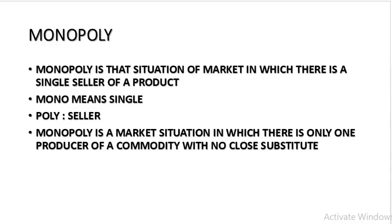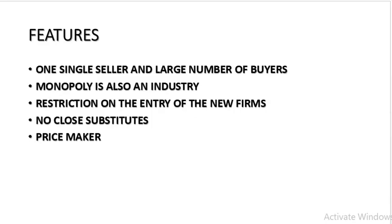Now we will understand what is monopoly. Monopoly is that situation of the market in which there is a single seller of a product — mono means single, poly means seller. Monopoly is just the reverse of perfect competition because under perfect competition there are large number of buyers and sellers, but here there is only one single seller with large number of buyers. Monopoly is also an industry, and here the price is controlled by the monopolist.